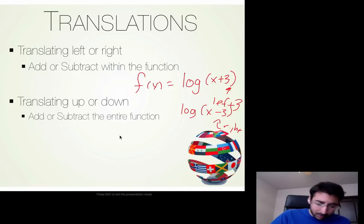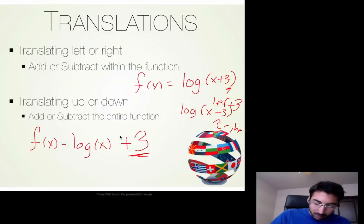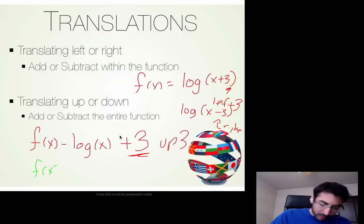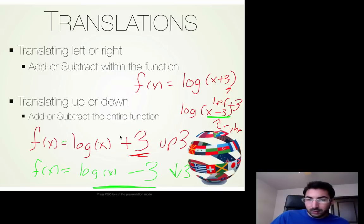When you want to go up or down, it's going to be outside of the function. So if I have f(x) = log(x) + 3, notice that the 3 is on the outside of the log — it's not within the log. So that means I'm going to be going up 3 units. If I have something like f(x) = log(x) − 3, notice that 3 is on the outside. Look at the difference between these two — this is saying go down 3 units. So we've already covered this; this is really just a review, just using logs instead of exponentials.